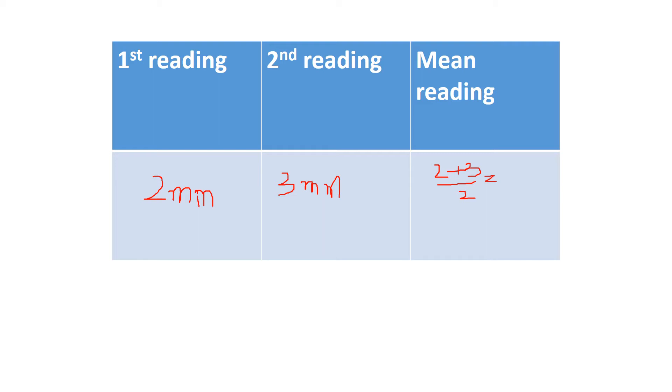So it's equal to, how much is it? Five divided by two is equal to, you can calculate it. Two point five. So your accurate or the mean reading is two point five millimeters. This is your answer, my dear.